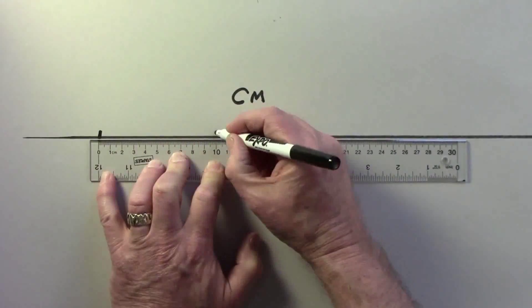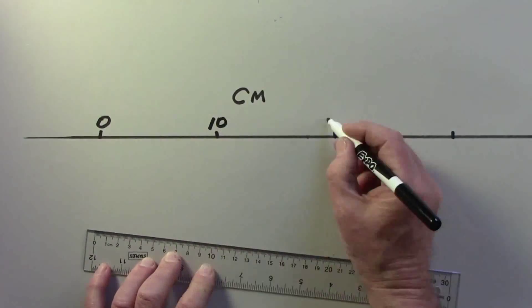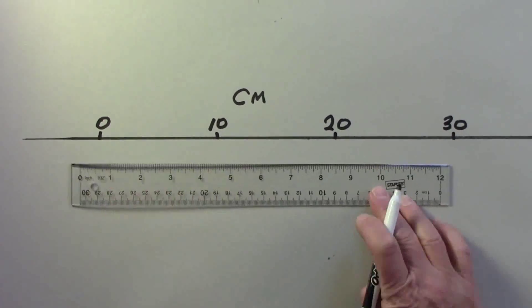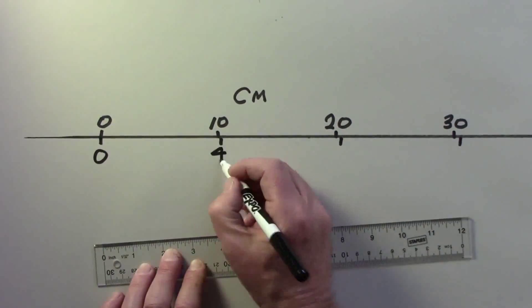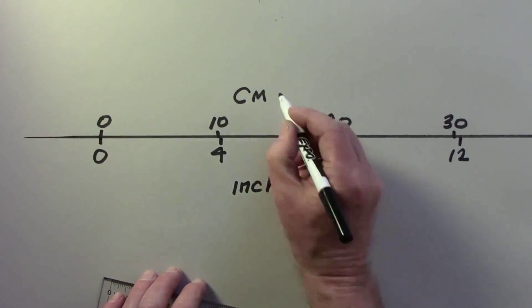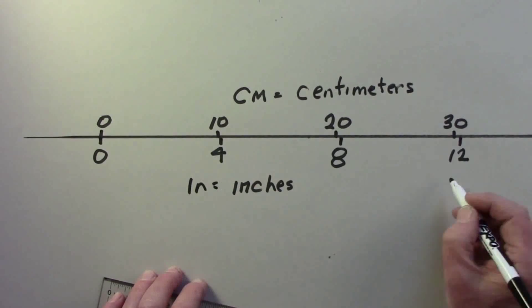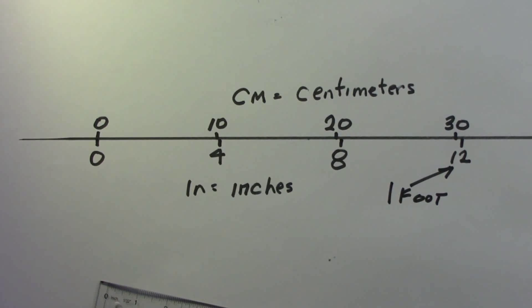I draw a straight line and put centimeters on one side: 10, 20, and 30. And 10 centimeters equals 4 inches, 20 equals 8, and 30 equals 12, roughly, approximately.